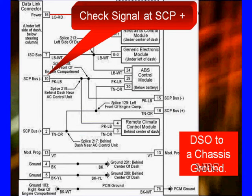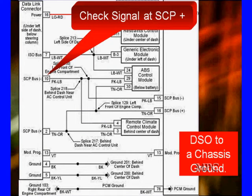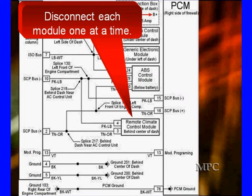Here is our overall circuit, just so we can go back to it. We're going to check from signal SCP+ to ground, and we're going to walk through and see if we can get a signal. If you couldn't see the correct signal, then you're going to move down and disconnect each module one at a time.